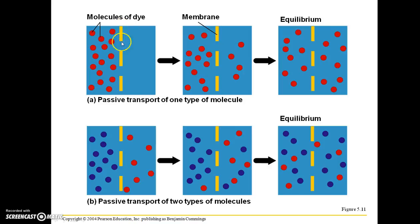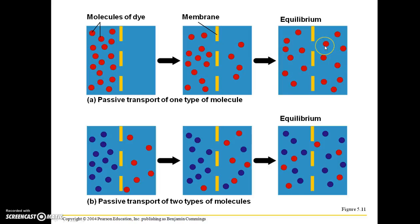This yellow dashed line that looks like highway painting lines here represents a semi-permeable membrane — the types found in cells. You have molecules of dye, and that membrane is apparently permeable to those molecules because they're able to pass through those spaces. Eventually those molecules of dye are going to reach an equilibrium where there's an equal number of dye molecules on either side of the membrane. You can also have passive transport with two types of molecules, and you would expect once equilibrium is reached that there is roughly the same number of each type of molecule on either side of that biological membrane.